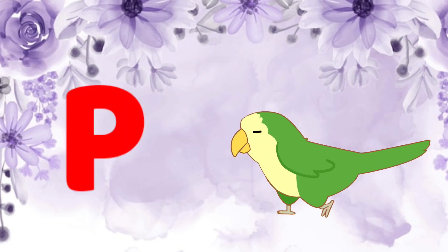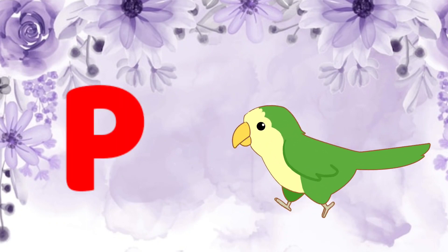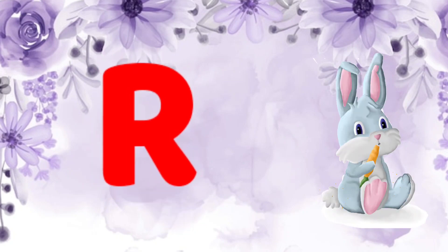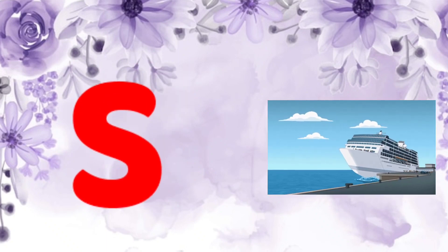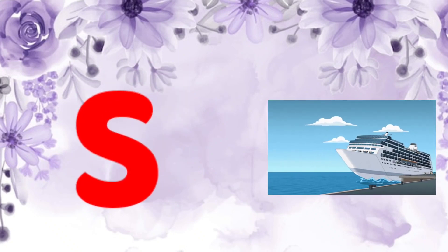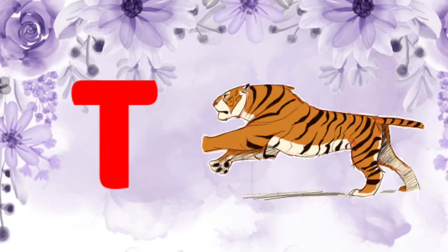P for parrot. Q for queen. R for rabbit. S for sheep. T for tiger. U for umbrella.